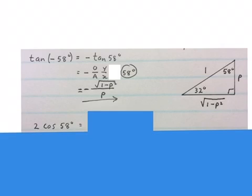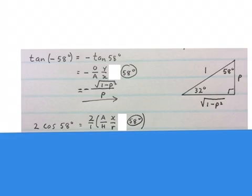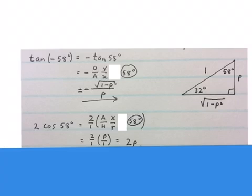The next one we're going to do is 2 cos 58 degrees. This is just my planning. I'm going to make that at 2 over 1 because there's a fraction coming. We know that cos is A over H from Sokatoa, and we're standing at 58 degrees this time. So I stand there. My adjacent is this one, and my hypotenuse is that one. Then we fill it in, and our final answer is 2P. So 2 cos 58 degrees in terms of P is 2P.